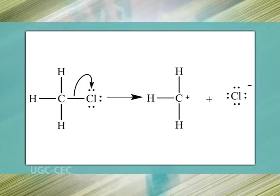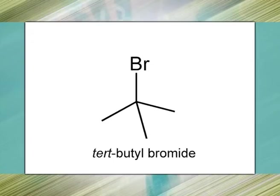In heterolytic cleavage, or heterolysis, the bond breaks such that the originally shared pair of electrons remains with one of the fragments. This process is also known as ionic fission. Heterolytic cleavage is most likely to occur in polar bonds, and the electrons will move towards the more electronegative atom. An example is the heterolytic cleavage of the C–Br bond in t-butyl bromide.